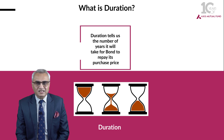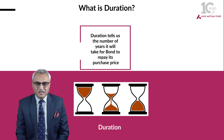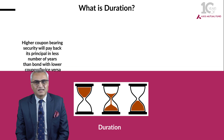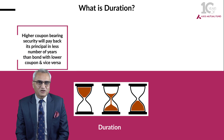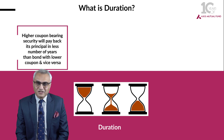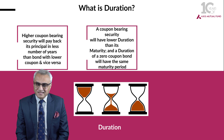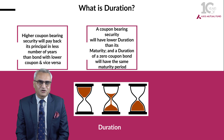Naturally, since there is a coupon attached to it and you are receiving interest payments on a regular basis, the duration of this will be less than 5 years. A higher coupon bearing security will have a lower duration than a lower coupon bearing security. The duration of a zero coupon bond with the same analogy will be equal to its maturity.